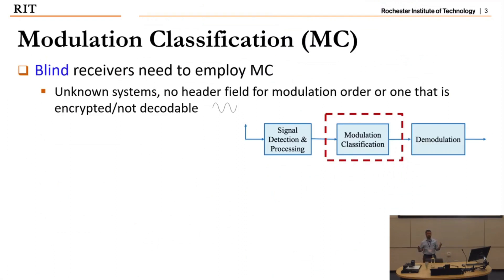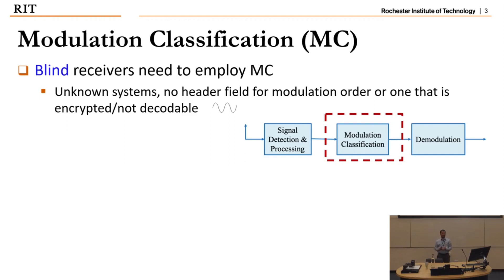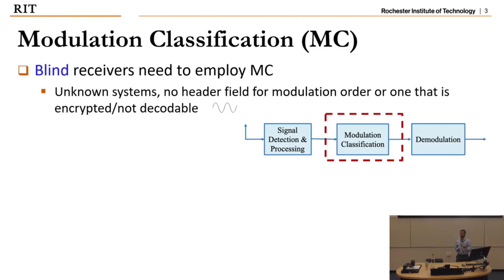Typically, a transmitter notifies the receiver of what modulation scheme it uses so that the receiver can demodulate the bits. However, in certain cases — specifically when we have a blind receiver — the receiver needs to classify the modulation scheme itself. A blind receiver is one that doesn't know the transmitting system, or where the transmitter's header field is either absent, encrypted, or non-decodable.